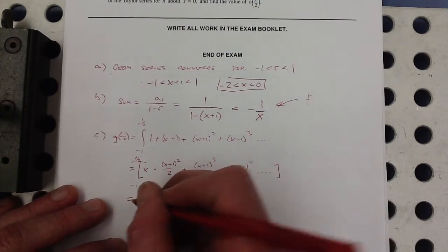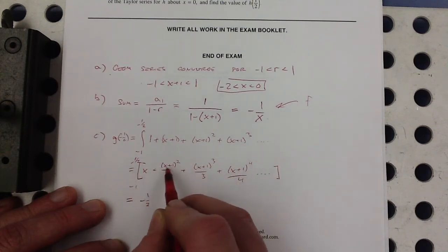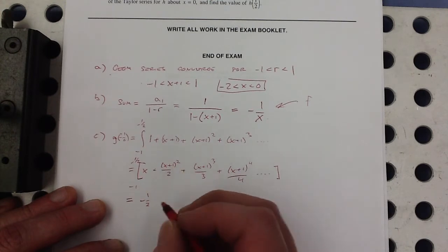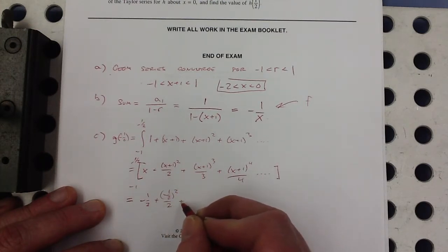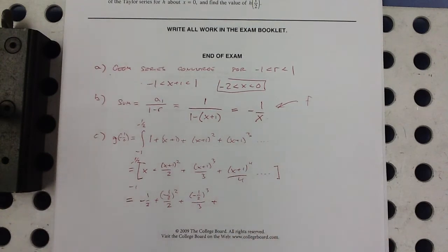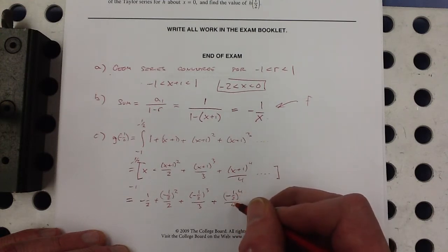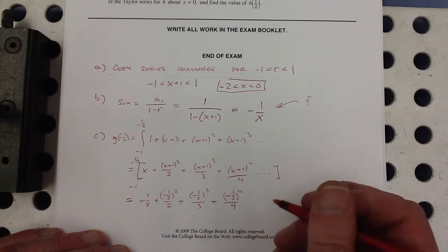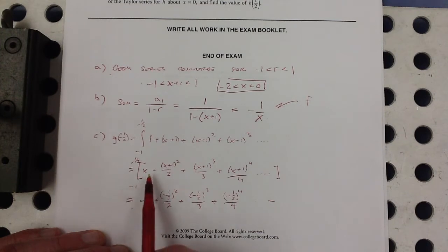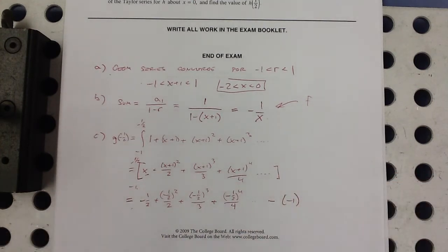And then we could say, well, let's plug in our values. So when I plug in negative 1 half, I get negative 1 half. When I plug negative 1 half into any of these little things here, I'm going to get negative 1 half. So negative 1 half squared over 2 plus negative 1 half cubed over 3 plus negative 1 half to the 4th over 4 and so on minus what I get when I plug in 0, which is when I plug in negative 1.